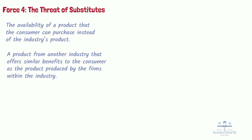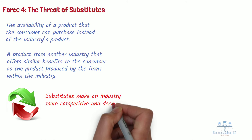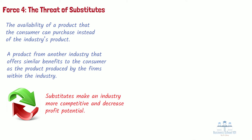The threat of substitution in an industry affects the competitive environment for the firms in that industry and influences those firms' ability to achieve profitability. The availability of close substitute products can make an industry more competitive and decrease profit potential for the firms in the industry. On the other hand, the lack of close substitute products makes an industry less competitive and increases profit potential for the firms in the industry.